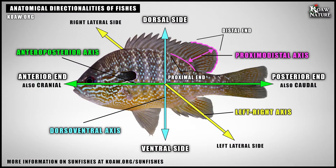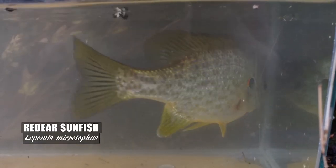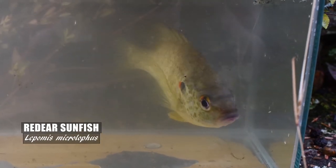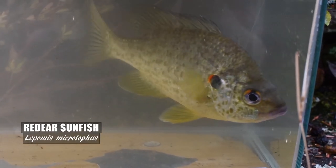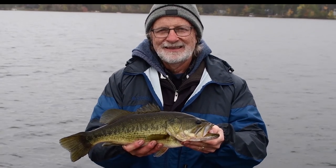Understanding the anatomical directionalities used when describing fishes is an absolutely valuable skill to have for any fisher or fish enthusiast, because it helps you better understand not just what my field guides are talking about, but what other field guides are talking about, what's in fishing articles, and even what's in your local fishing regulations. And knowing these anatomical directionalities is beyond essential for anyone with a desire to work within the zoological fields of academia or wildlife management.